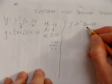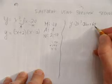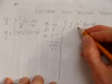I'll do a second example here. y equals 2x squared minus 26x plus 60. The first thing I notice right away is I have a GCF, a greatest common factor.